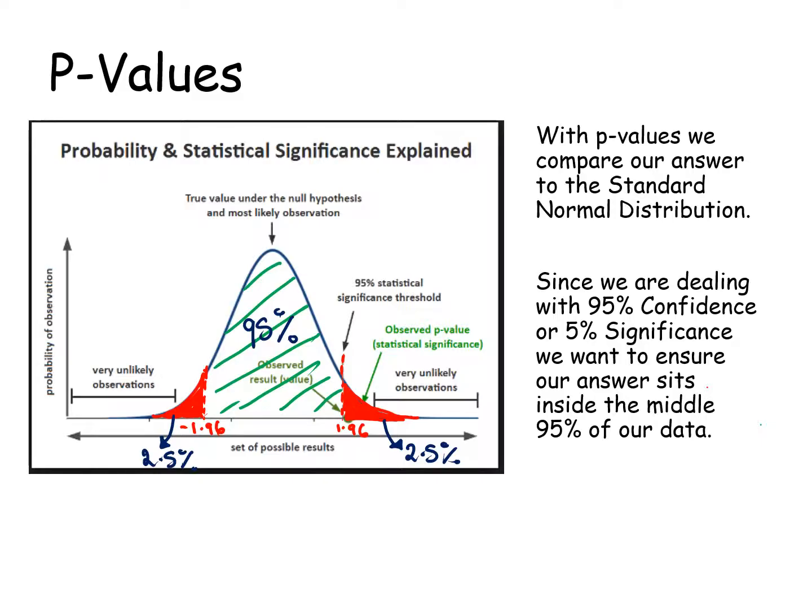If it sits outside those, that's getting into our 5% level of significance, in those tails, in those areas that are our rejection regions.